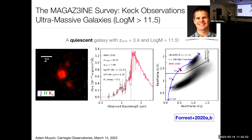We've been working very hard with Keck doing a survey called MAGAZINE, looking at these galaxies with MOSFIRE at redshift 3, where it's more manageable — redshift 5 is very hard because most of the features are past the K-band. This is a paper from a few years ago: a galaxy at redshift 3.4, spectroscopically confirmed, with a log stellar mass of 11.5 — a really, really massive galaxy at high redshift.